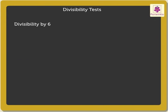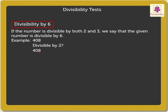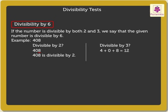Divisibility by 6. If the number is divisible by both 2 and 3, we say that the given number is divisible by 6. For example, look at the number 408. Is it divisible by 2? The number ends in 8. Thus, it is divisible by 2. Is it divisible by 3? 4 plus 0 plus 8 is equal to 12, which is divisible by 3, which makes the number 408 divisible by 6.